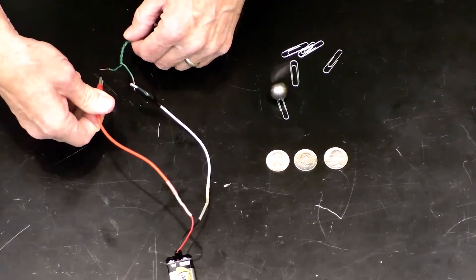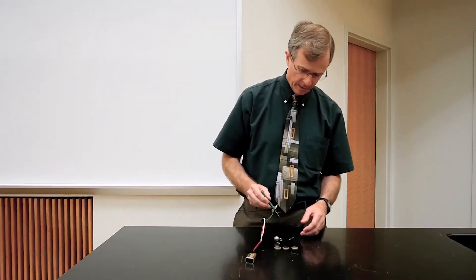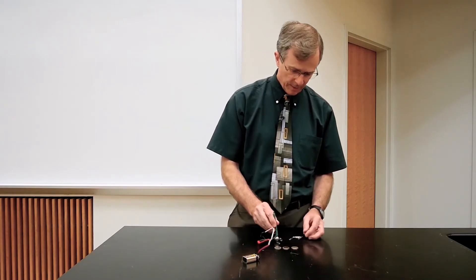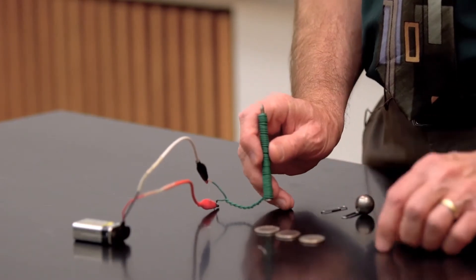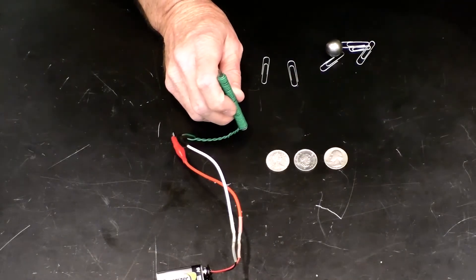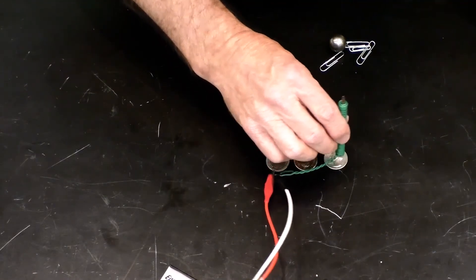So if we connect it up, you can see that now we can pick up these paper clips. We can even pick up a steel ball. We can try it out on these coins. This is an American quarter, no go.